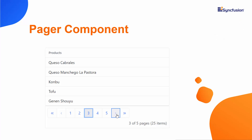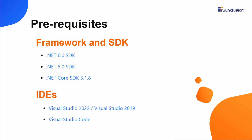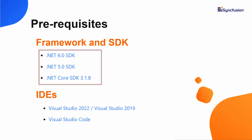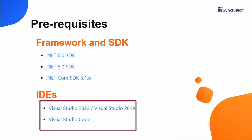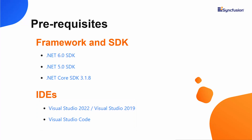Now, let's add the Syncfusion Blazor Pager to a Blazor WebAssembly app using Visual Studio 2019. Before proceeding, make sure that you have one of the following .NET SDKs installed in your machine. You should also have one of these IDEs installed. With that confirmed, let me start building the app.